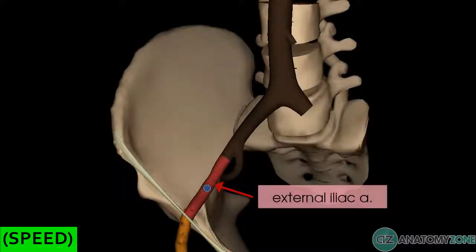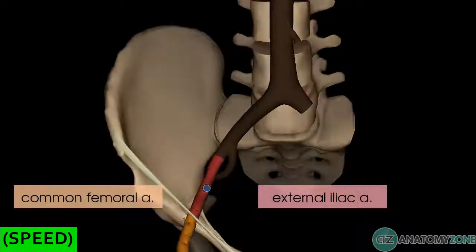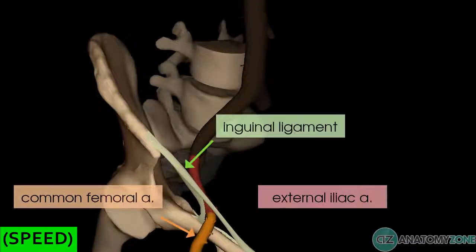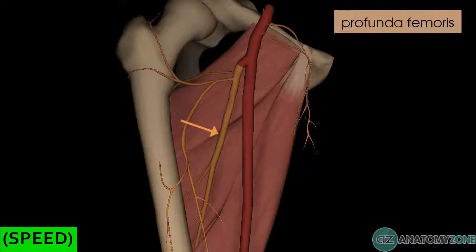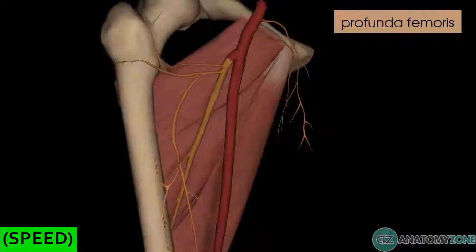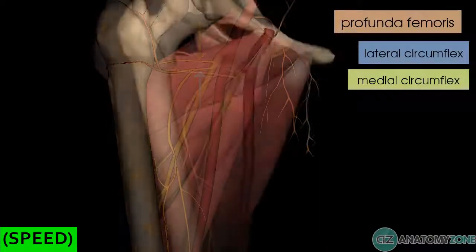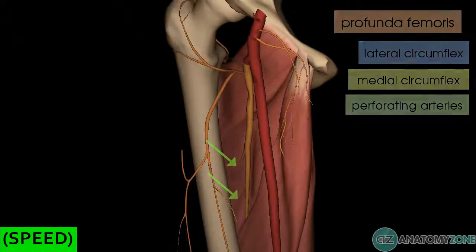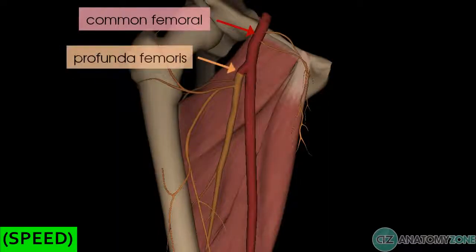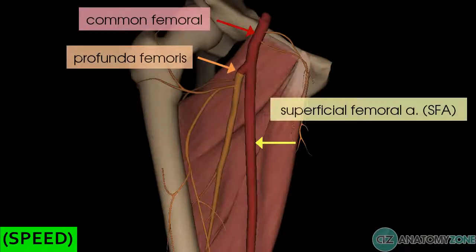Coming back to the external iliac artery — this artery becomes the common femoral artery as it crosses under the inguinal ligament to enter the femoral triangle. The common femoral artery then gives off a deep branch known as the profunda femoris artery, also known as the deep femoral artery, and it has two main branches: the lateral circumflex artery and the medial circumflex artery. The profunda femoris terminates as perforating branches, which perforate the adductor magnus muscle. The common femoral then continues as the superficial femoral artery, the SFA.